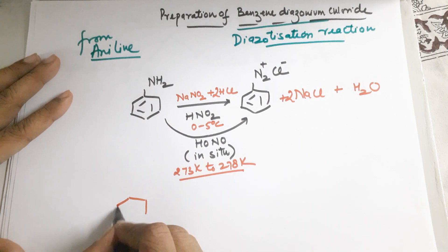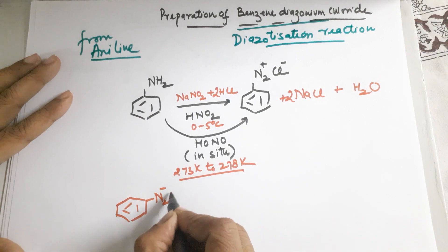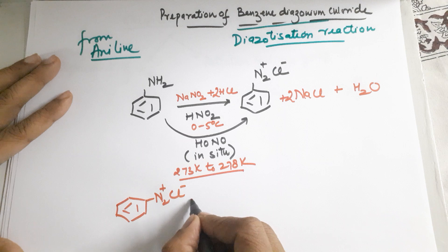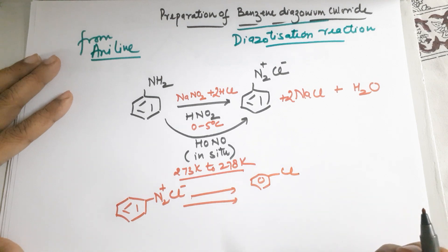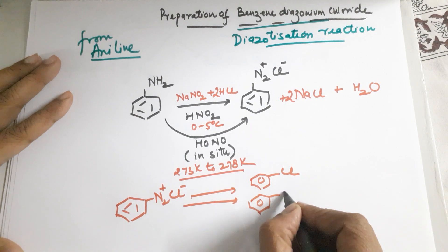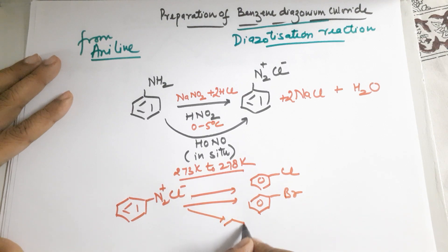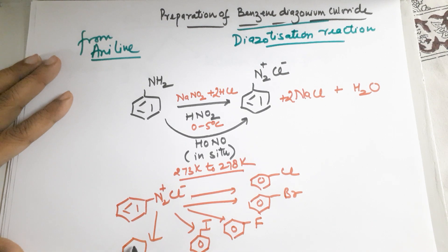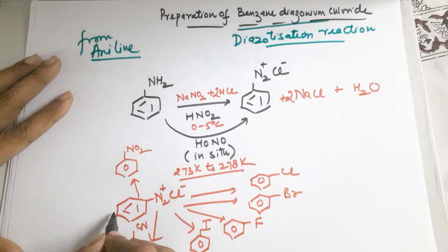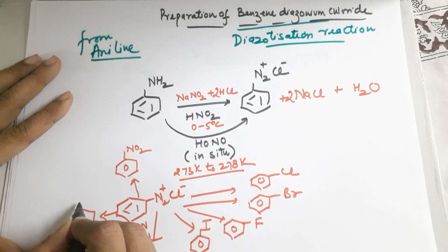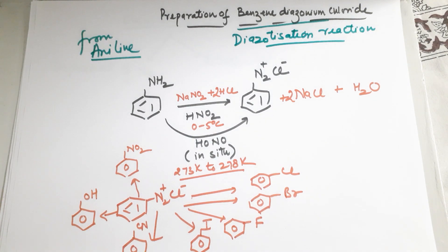The diazonium salt importance means you can prepare many things. You can prepare chlorobenzene, bromobenzene, fluorobenzene, iodobenzene, cyanobenzene, benzene, nitrobenzene, and phenol. This clearly means this reaction has a lot of importance.